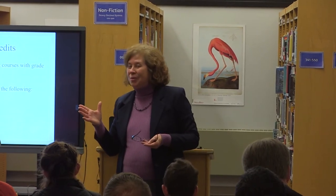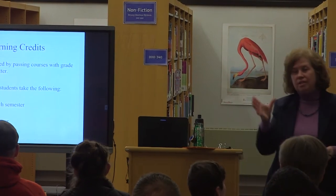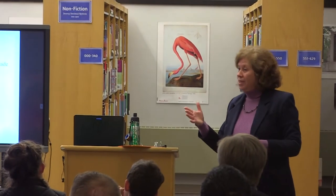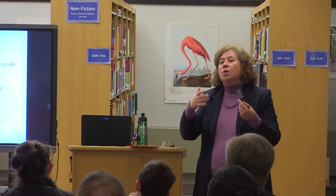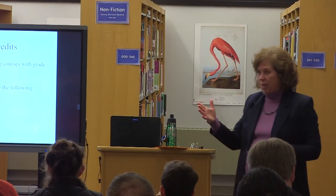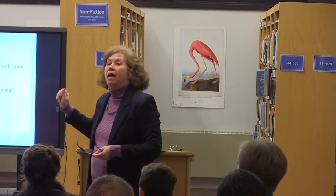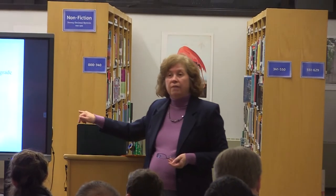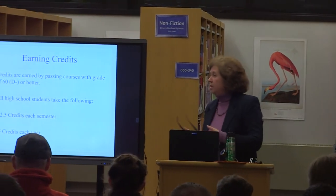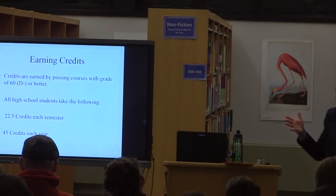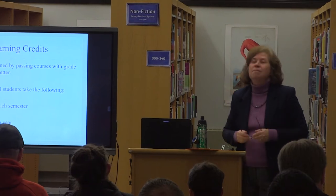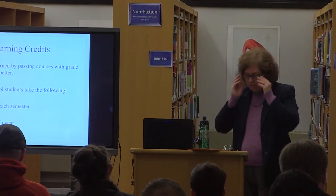All students are taking courses on what we call the block schedule, which models a college schedule. A course starts in August and ends when the semester ends — typically the third week in January. A new semester begins the fourth week in January and goes until school ends in June. All students are taking 22.5 credits each semester for a total of 45 credits a year. By graduation, they'll have the potential of 180 credits; they need 160 to graduate, so there is a little cushion if someone makes a mistake.